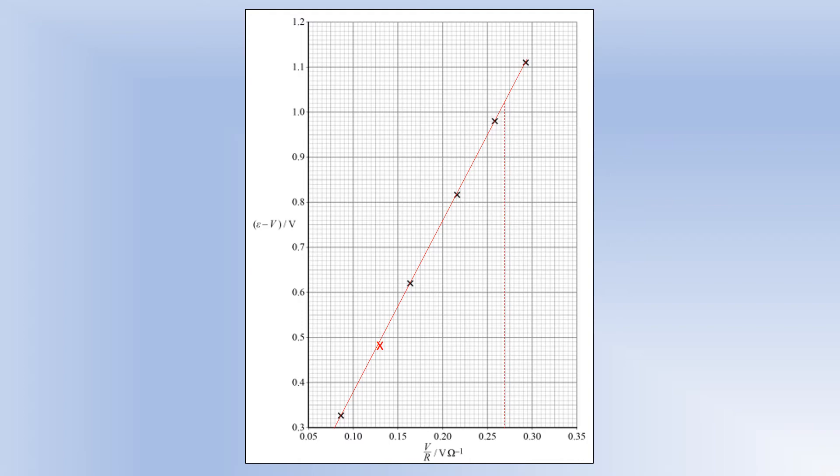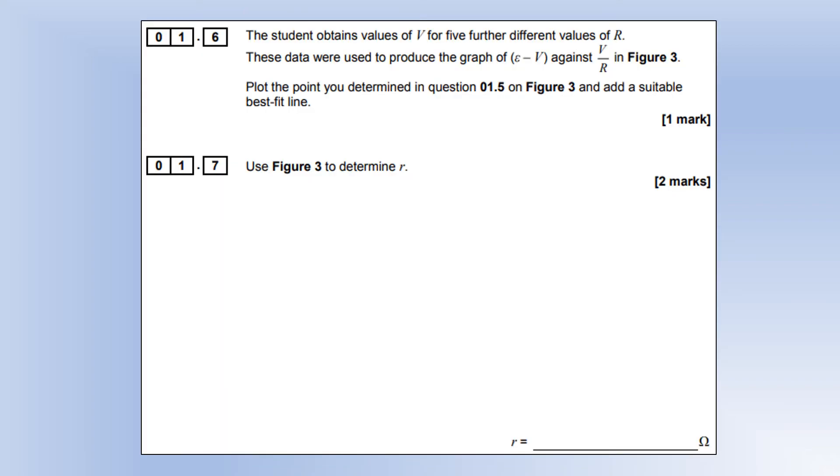Then we want to find out what the gradient of the graph is. I'm going to use this point here and the point where it crosses the X axis. So the gradient is going to be the change in Y over change in X, which I reckon is 3.8 ohms, which is the internal resistance according to the equation we saw earlier.